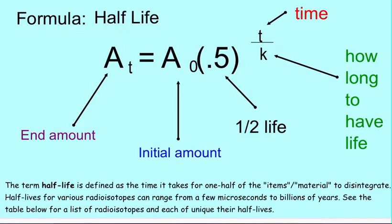Here is an introduction to exponential decay focusing on half-life. Here is the formula for exponential decay and half-life. The A sub t represents your end amount after your half-lives have gone by. Your A naught represents your initial amount.